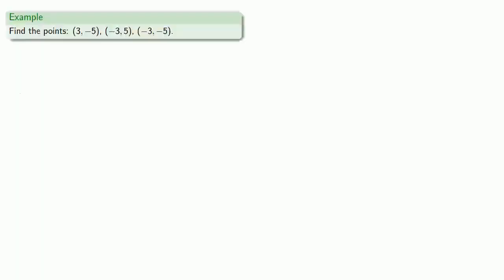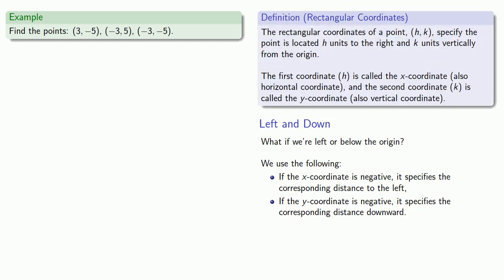So for example, let's try and find these points. Since some of the coordinates are negative, we'll want to remember what it means to have a negative x or y-coordinate. So our first point has a positive x-coordinate, so that means we're going to go to the right, but since the y-coordinate is negative, that means we're going to go down instead of up. So to find our first point, we start at the origin, go 3 units to the right and 5 units downward. Now, a good habit to get into is always labeling the points that you graph with the coordinates. So we'll put down those coordinates, (3, -5).